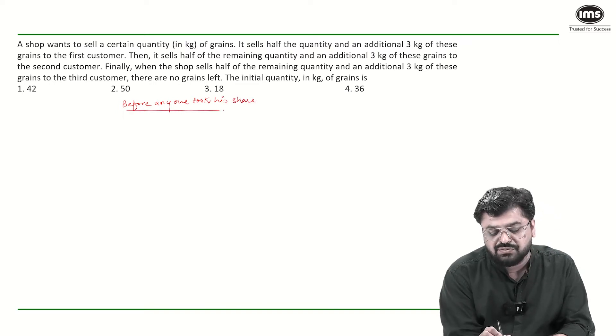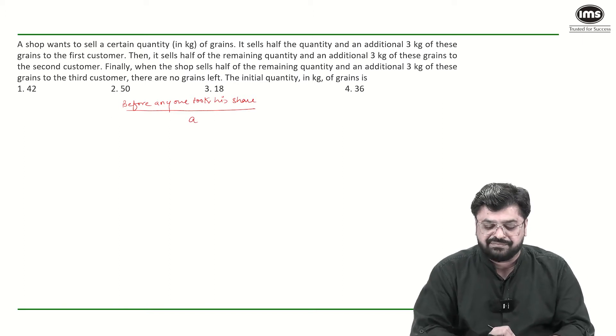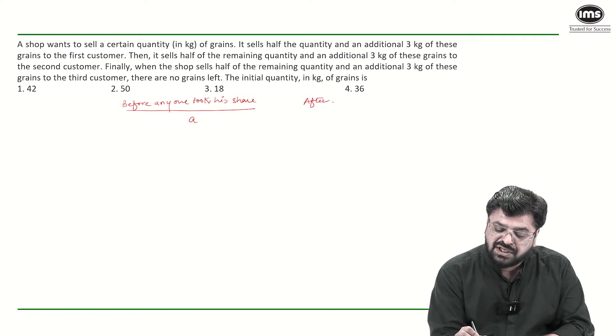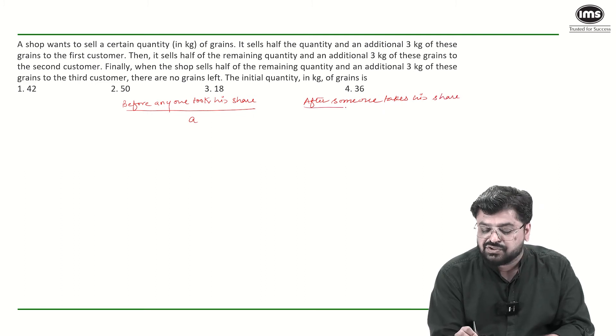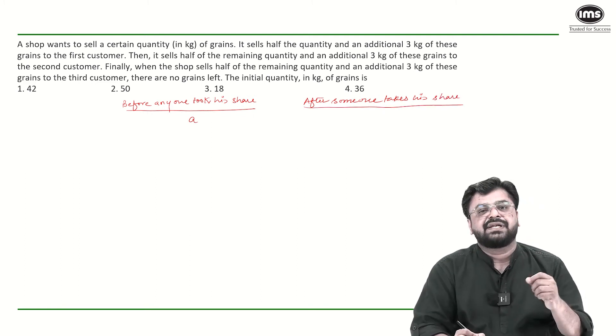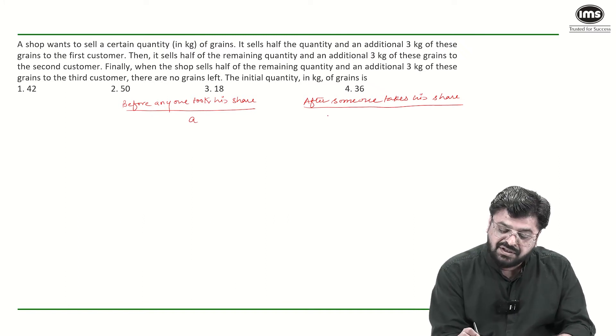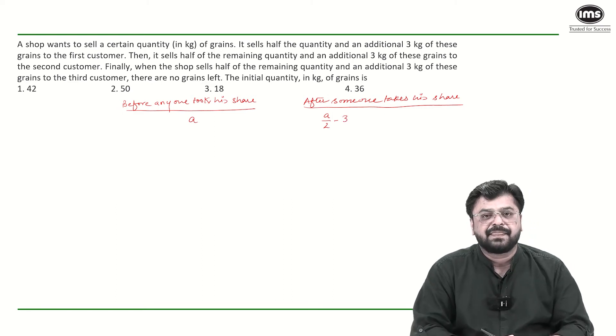Let's assume it was A. The quantity was A and after someone takes a share, so what does he take? He takes half plus 3. So, what will be remaining? Half minus 3 is remaining.